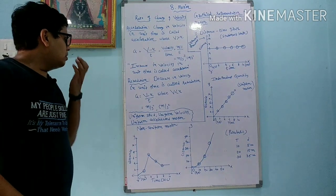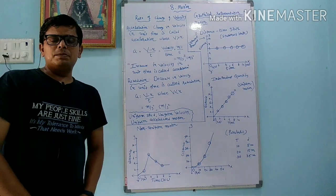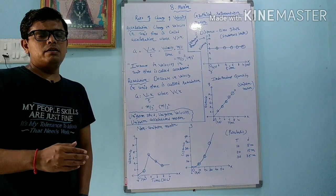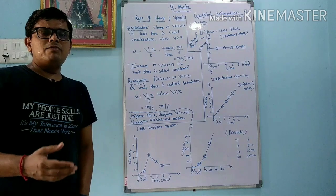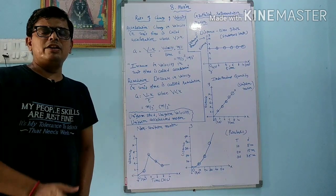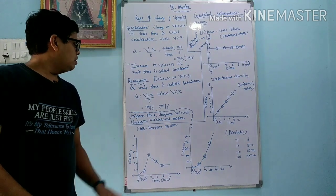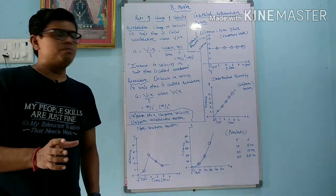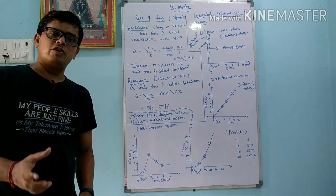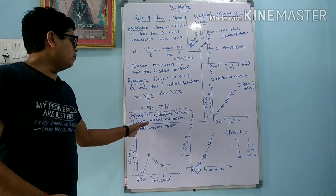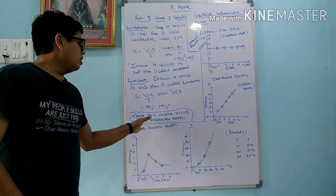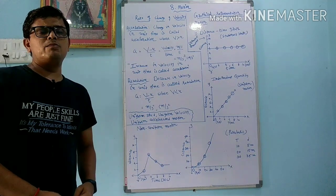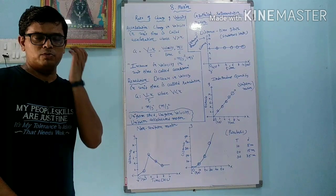Last time we forgot to discuss uniform speed. Uniform speed means if any object maintains its speed in equal intervals of time, it is called uniform speed. For uniform velocity, if an object maintains its velocity in equal intervals of time, it is called uniform velocity. And if an object maintains its accelerated motion in equal intervals of time, it is called uniform accelerated motion.